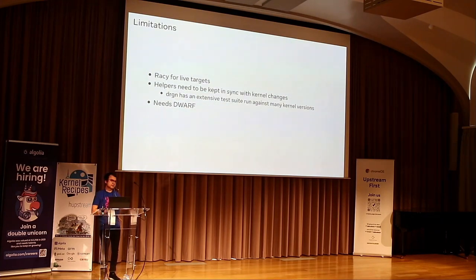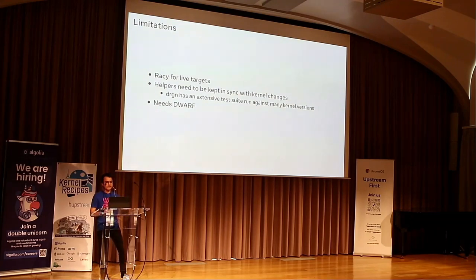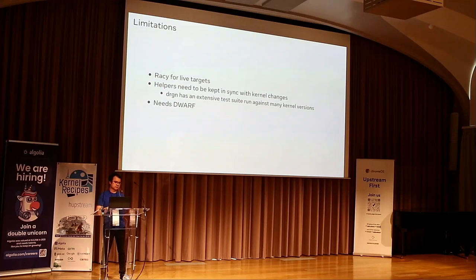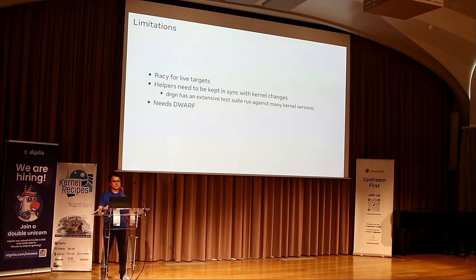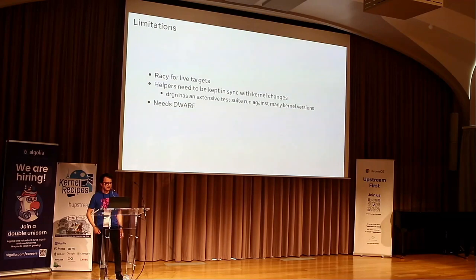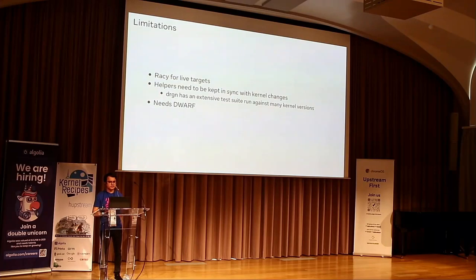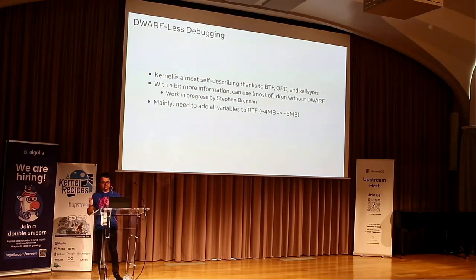Drgn does have a few limitations. If you're debugging a live program it's going to keep doing stuff while you're debugging — nothing we can really do about that, and I haven't run into it too much in practice. Helpers obviously need to be kept in sync with kernel changes, so I run Drgn on all the kernel versions from kernel.org that we support. And it needs DWARF information, which can be a big limitation if you don't want to install a multi-gigabyte package.